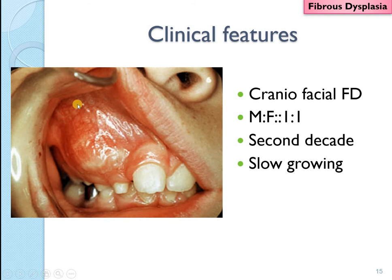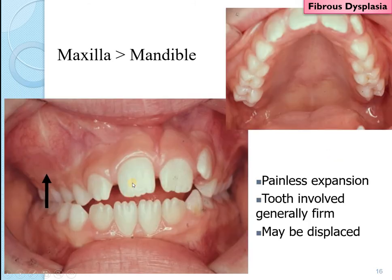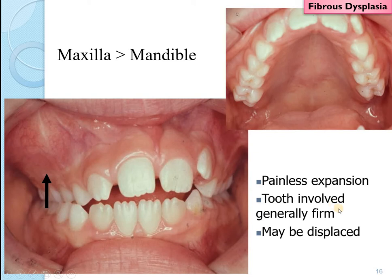There will be a bony hard swelling where the skin does not show any sign of inflammation. There does not seem to be a gender predilection, but it predominantly occurs in the 10 to 20 years of age. It is a slowly growing lesion which may or may not displace the teeth. Maxilla seems to be more commonly involved, with bony hard swelling seen on both the buccal and palatal segments. The teeth are generally firm and not mobile — fibrous dysplasia does not dissolve the bone leading to tooth loss.